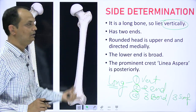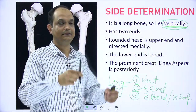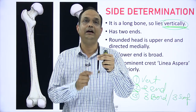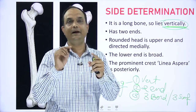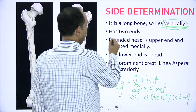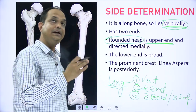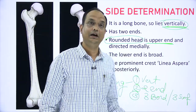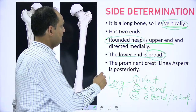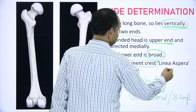Because you are reading a long bone, it lies vertically in the body. Once you keep the bone vertically, it has two ends — upper and lower. The upper end forms the hip joint, a ball and socket joint, with a rounded head directed medially towards the acetabular cavity. The lower end is broad and forms the knee joint with the tibia. The posterior surface has a prominent crest known as linea aspera.